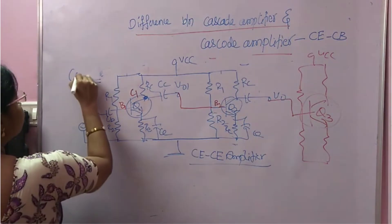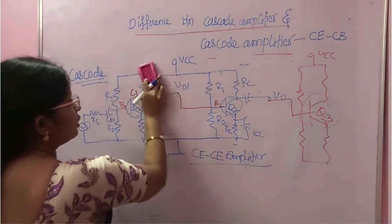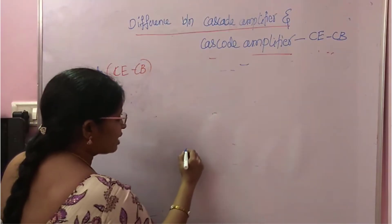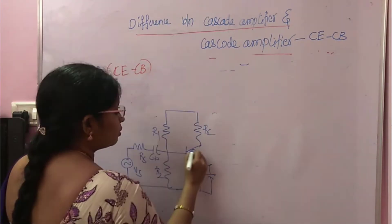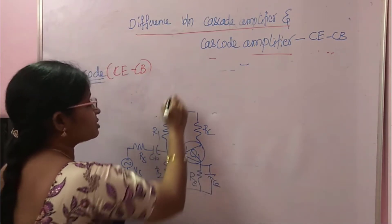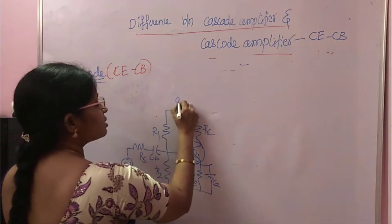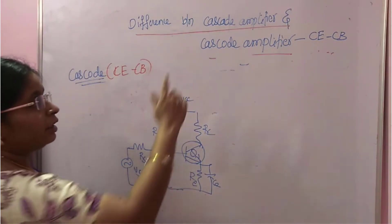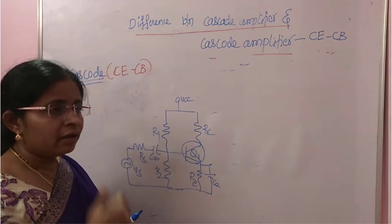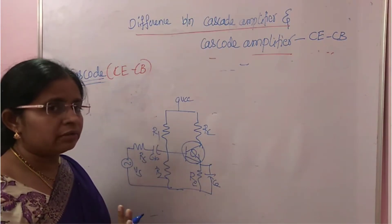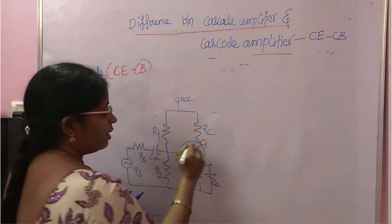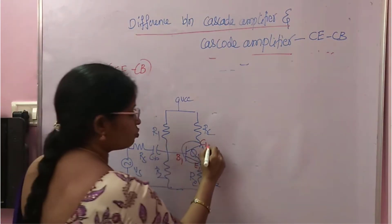I will draw cascode now. Example for cascode: CE-CB. So first I will draw CE. All electronic students must be able to draw the CE amplifier within a minute for practice. This is VCC. Now we have to draw the CB. For CB, the input is the emitter, the base is grounded, and the collector is the output. See here — this is B1, E1, C1. The first stage output is at C1. This is V01 you will get.